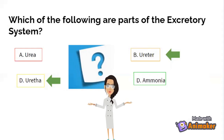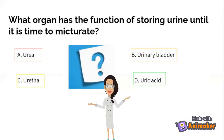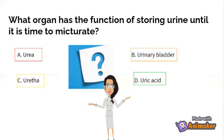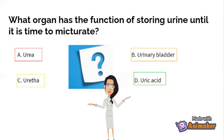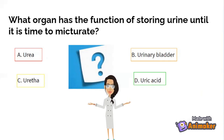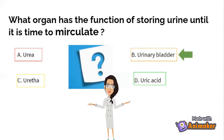What organ has the function of storing urine until it is time to mictuate? A: the urea, B: the urinary bladder, C: the urethra, and D: uric acid. Have you got the answer? It is the urinary bladder.